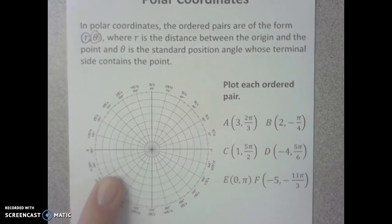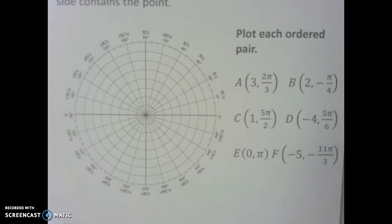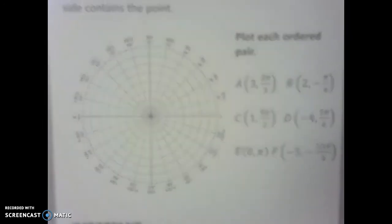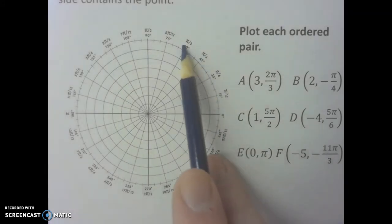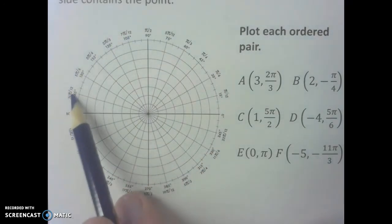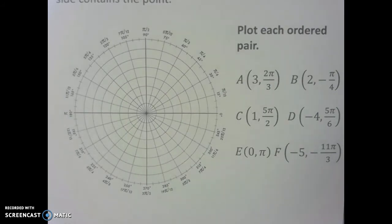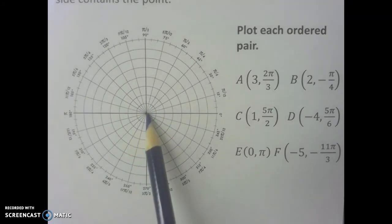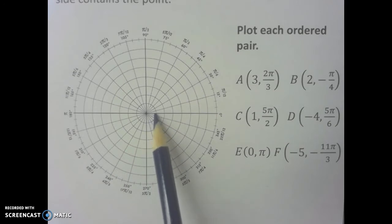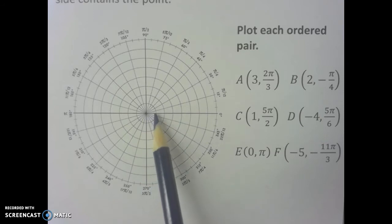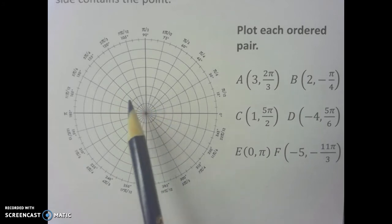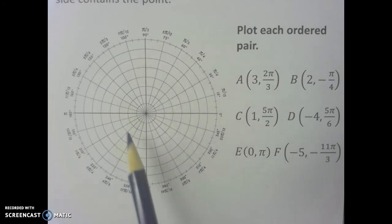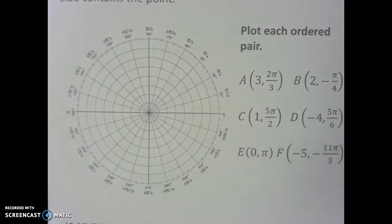Here's the polar coordinate graphing grid. The coordinate system has to be labeled slightly differently to graph polar coordinates. Notice the angle markings around the outside — they'll help you locate an angle when plotting an ordered pair. Also notice the concentric circles centered about the origin, which help you determine distance. Each circle is one unit further from the previous one, so the first circle has a radius of one, the next a radius of two, then three, and so forth.